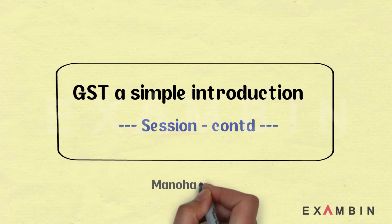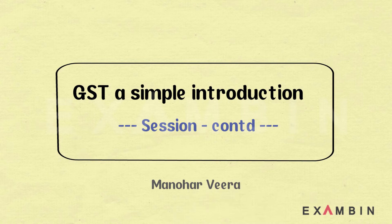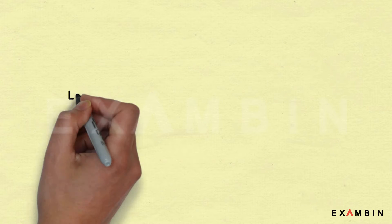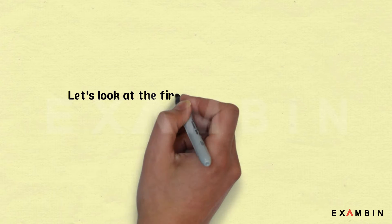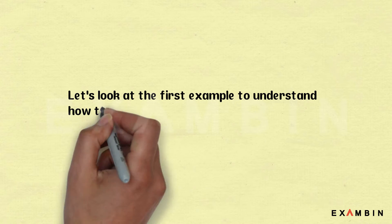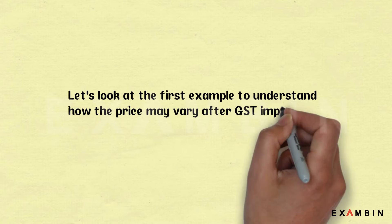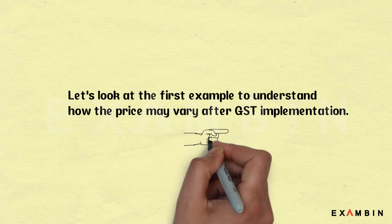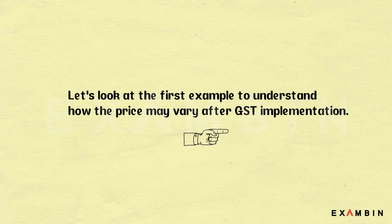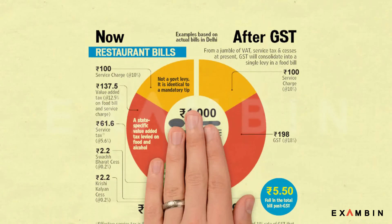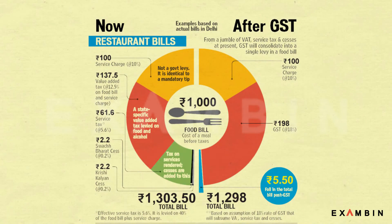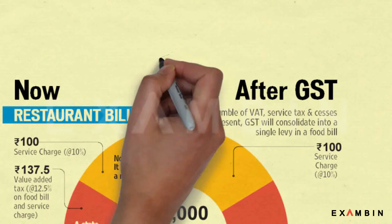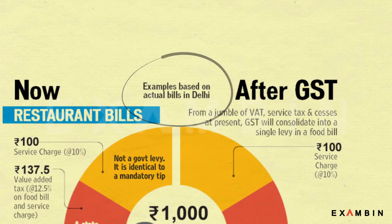Now let us look at the first example. In this example, we are going to determine how the price may go down or up after implementation of GST in a transaction. This example is based on the daily restaurant bill.